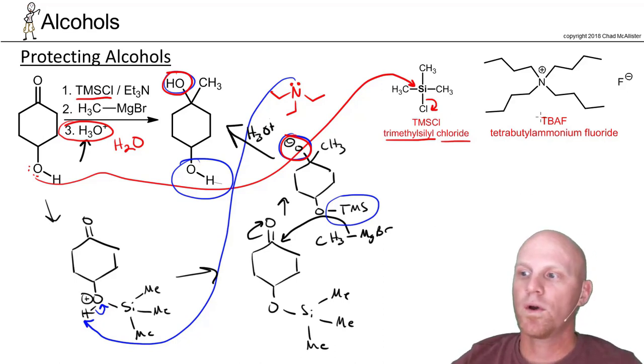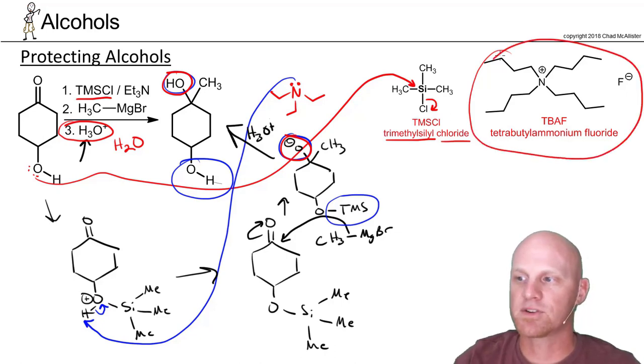...or you can add this big guy right here called TBAF—and almost everybody just calls it TBAF—but that's tetrabutylammonium fluoride. And it's the fluoride that's the way of getting in the solution; it's the fluoride that actually is going to remove the protecting group and turn it back into an alcohol.